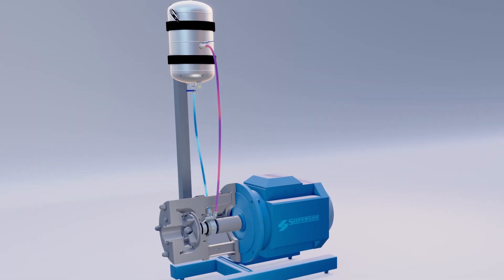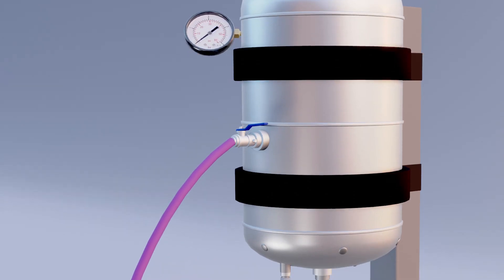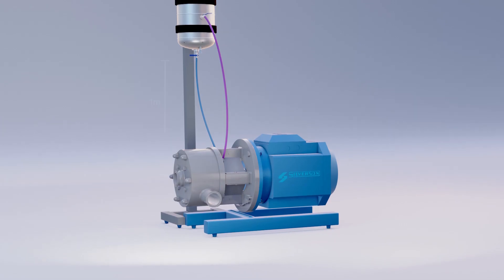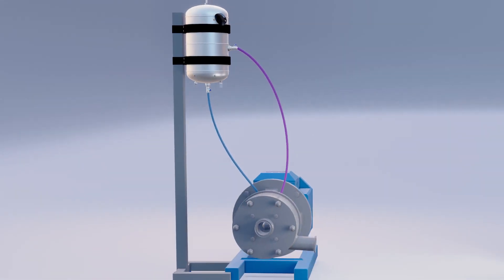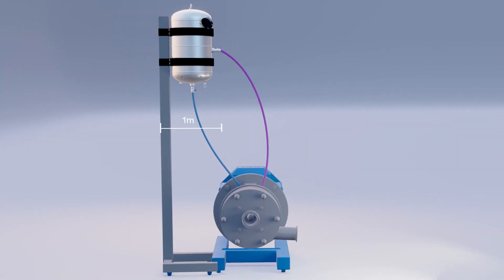The thermosiphon sealant system normally needs to be positioned approximately one meter above the seal chamber of the inline mixer and no more than one meter away on the horizontal.